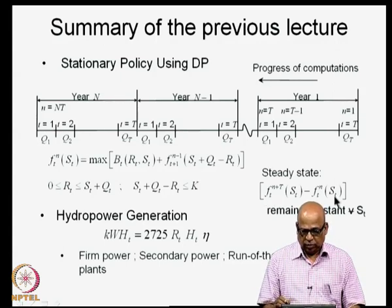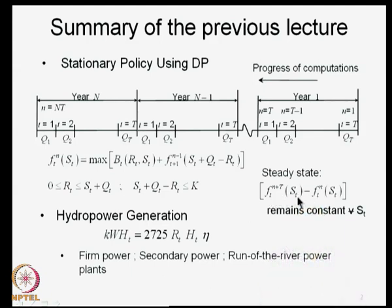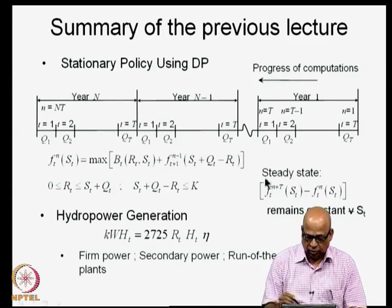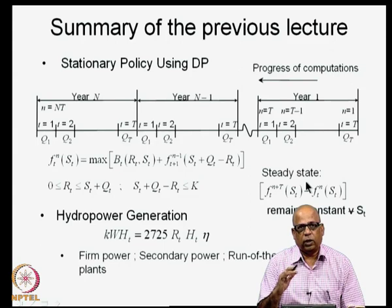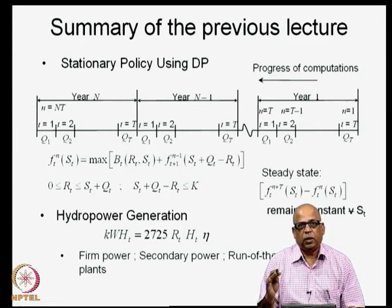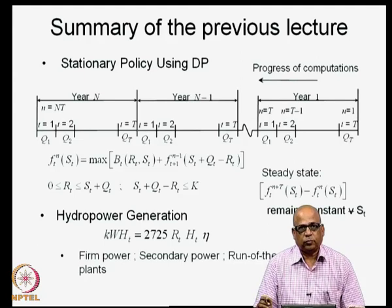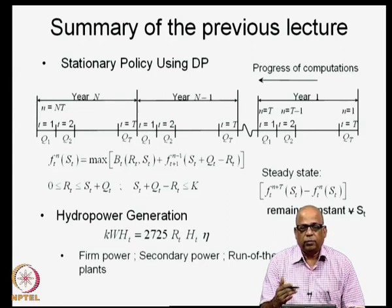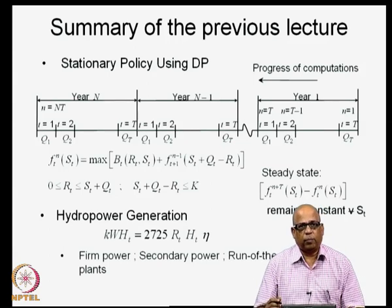If this annual system performance remains constant for all S_t and all given time periods t, then we say that the steady state is reached. In most realistic problems, the steady state is reached fairly soon, within about 4 or 5 cycles. That is where we specify the policy — for a given storage state, we specify the release to be made or the end-of-period storage to be maintained. This is how we specify the reservoir operating policy.